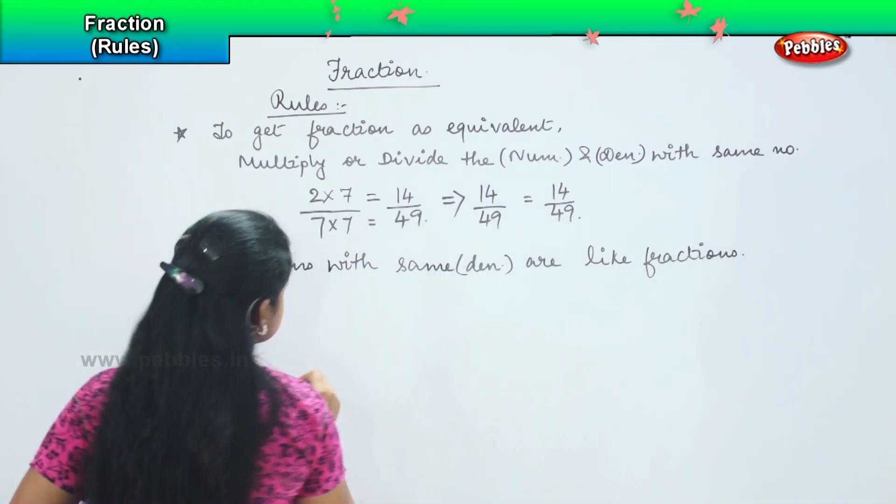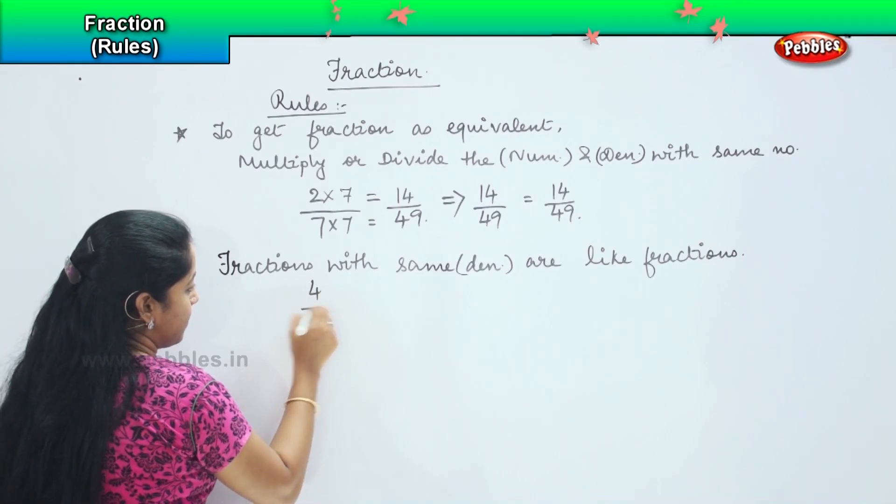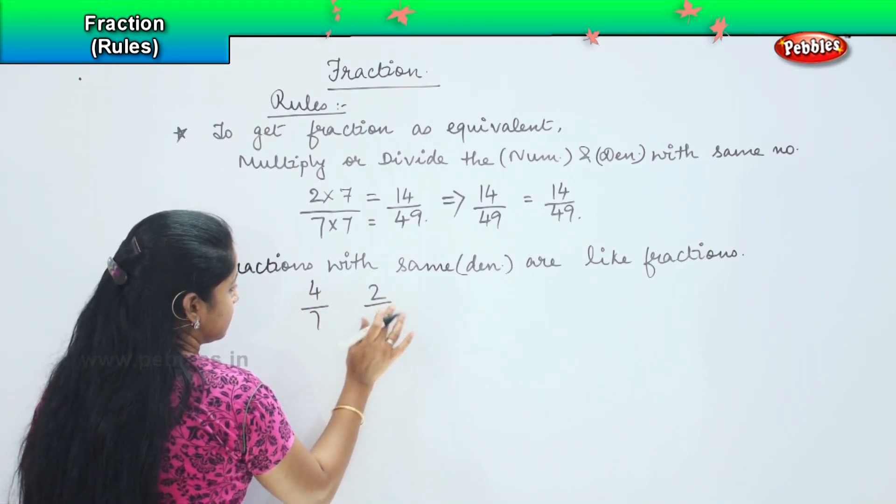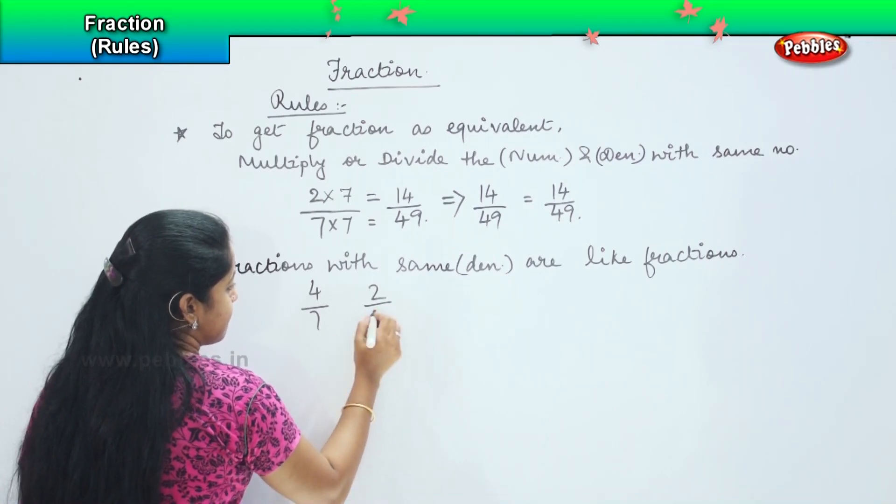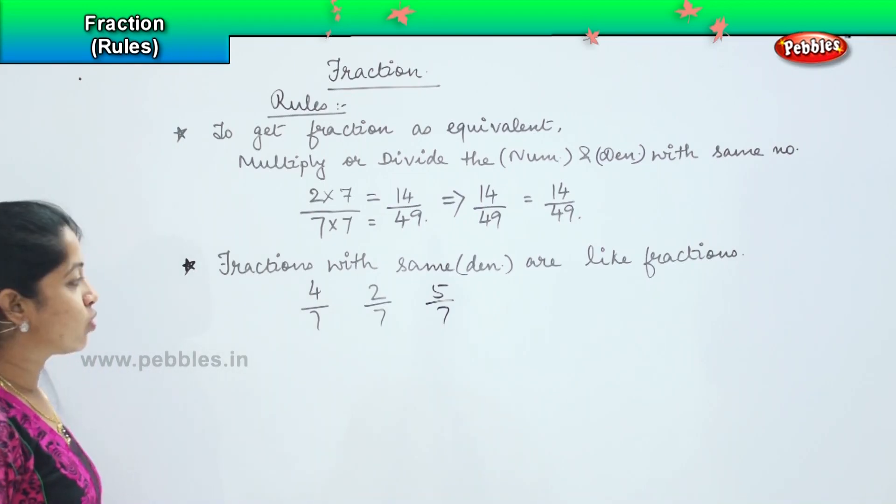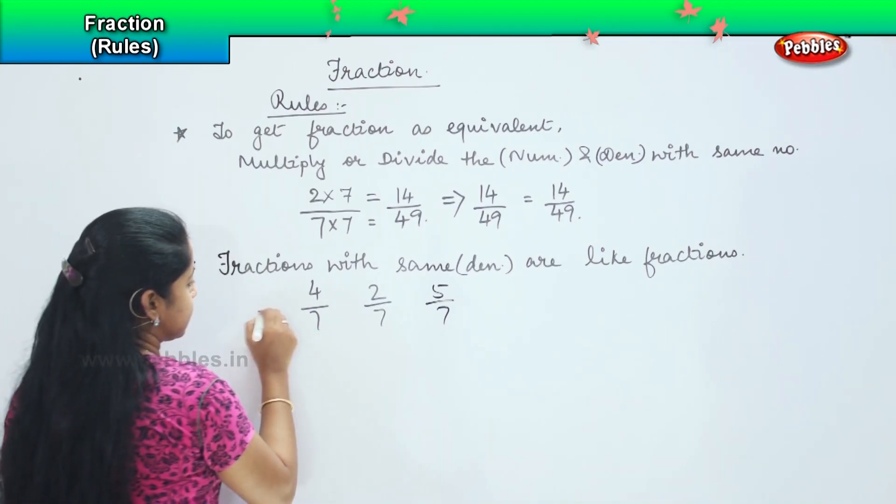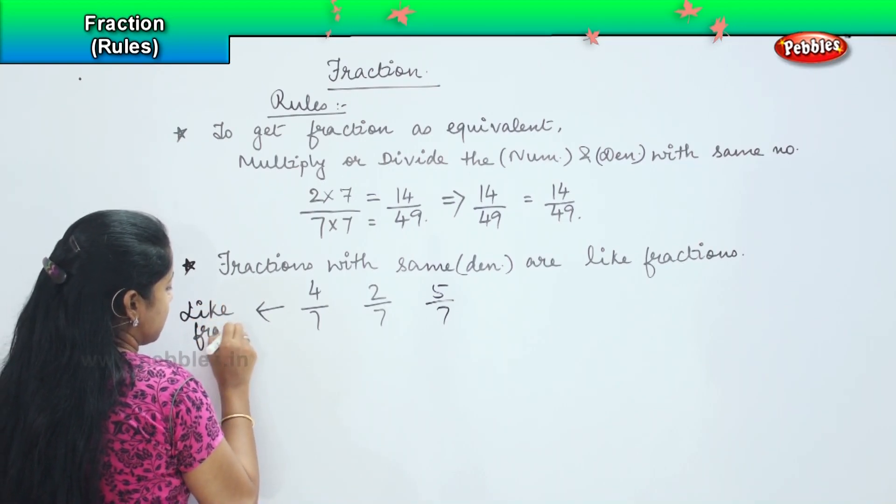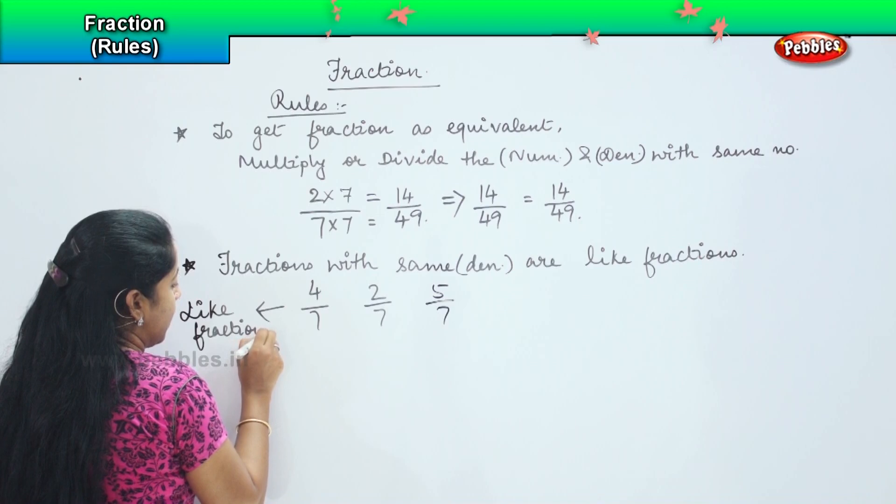Now for example, if I have say 4 by 7, 2 by 7, 5 by 7. So these are called as like fraction.